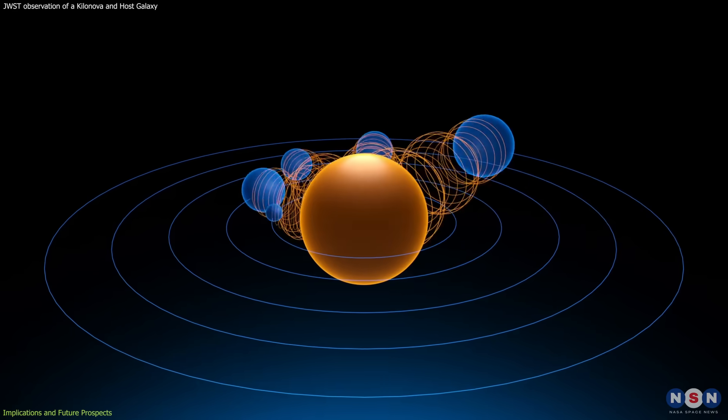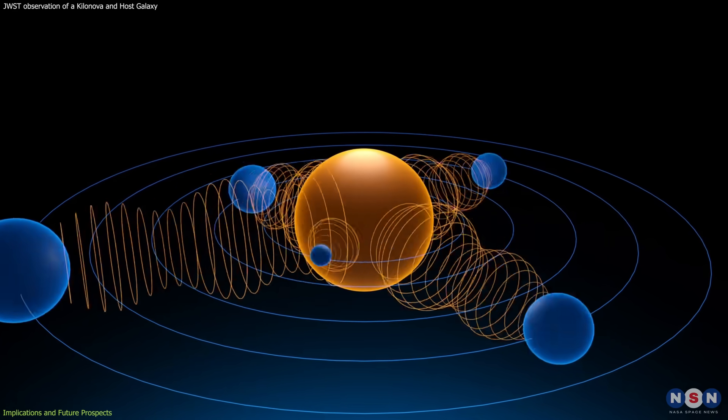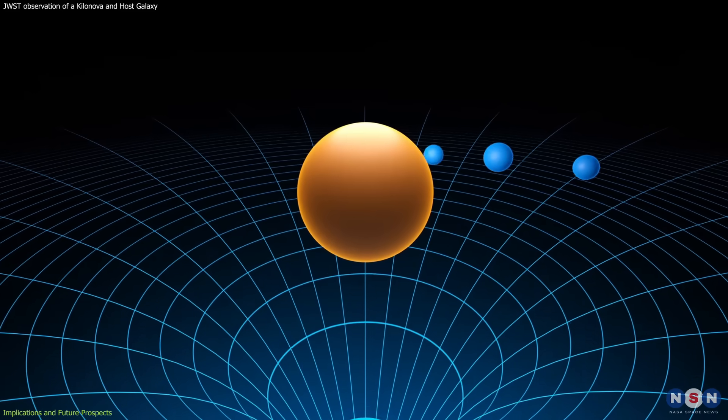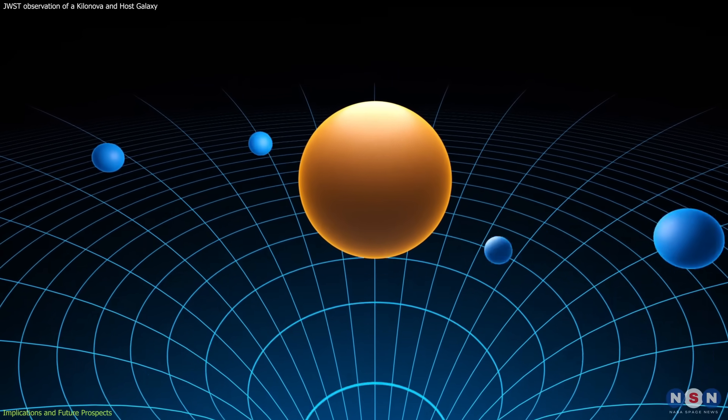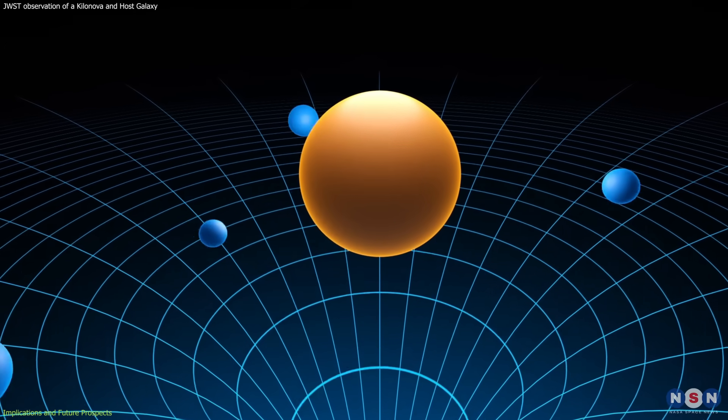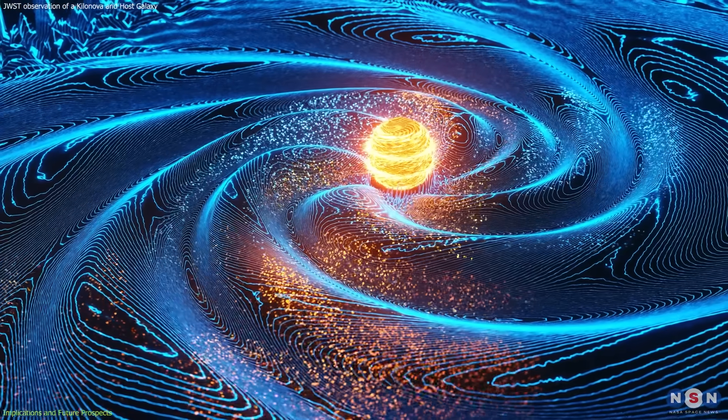For yet another thing, we can learn about the nature of gravity. We know that gravity is described by Einstein's theory of general relativity, which predicts that massive objects can warp space and time and emit gravitational waves.